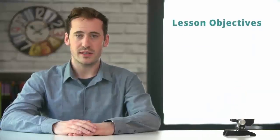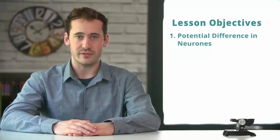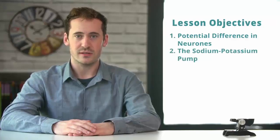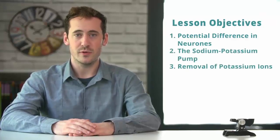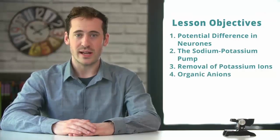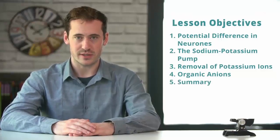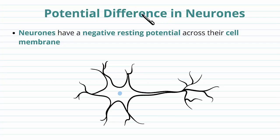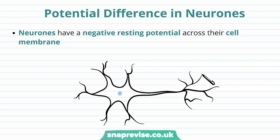Hi guys. In this video we'll be looking at the potential difference in neurons, the sodium potassium pump, removal of potassium ions, organic anions, and then we'll finish with a summary. When we're discussing the impulse of electrical signals across neurons, we need to understand certain terms. The first term we need to understand is potential difference, sometimes also known as voltage.